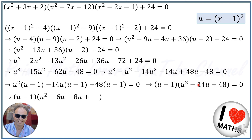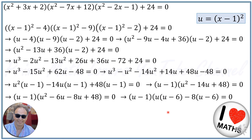Factoring out (u-6) from u(u-6)-8(u-6) gives (u-6)(u-8). So at the end we have: (u-1)(u-6)(u-8) = 0. Solving this equation is now very simple.